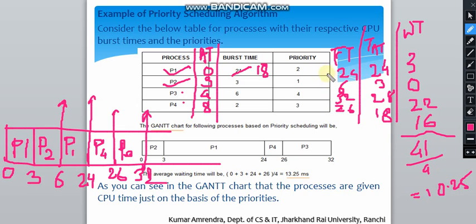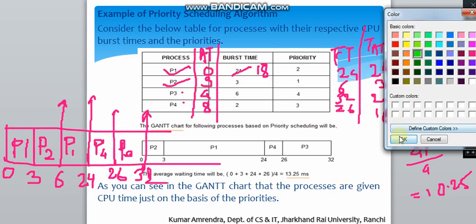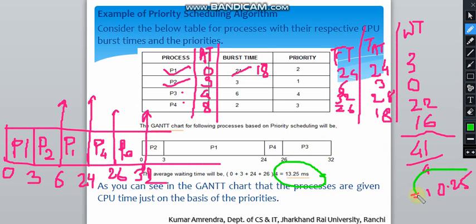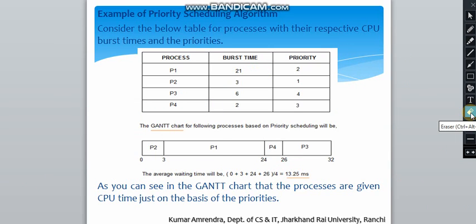Comparing the two: in the non-preemptive case the average waiting time was 13.25, while in the preemptive case we get 10.25. Preemptive scheduling is more optimized than non-preemptive scheduling. We have seen this in shortest job first as well as in priority scheduling — preemptive is more beneficial. These were the examples of both algorithms. In the next lecture we will see problems with priority scheduling and round robin.